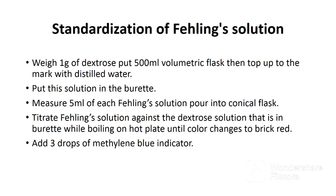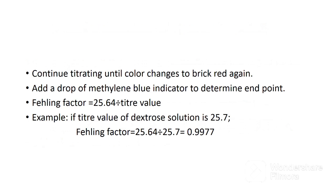Weigh one gram of dextrose powder and put it in a 500 ml volumetric flask. Add some water and shake to dissolve all the dextrose powder. After dissolving, top up with distilled water to the mark. Put this dextrose solution in the burette and mount the burette on the stand. Measure 5 ml of each Fehling solution and pour into a conical flask. Titrate the Fehling solution against the dextrose solution in the burette while boiling on a hot plate until the color changes to brick red. Add three drops of methylene blue indicator.